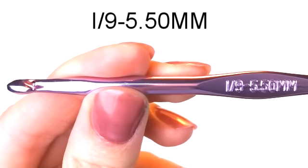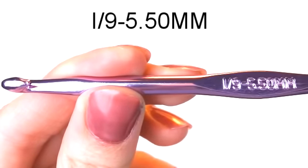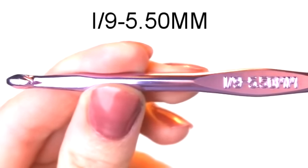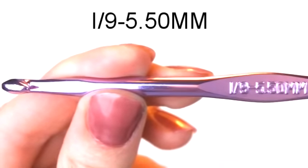When you go out and purchase your first hook, I recommend buying an I-9 hook to start out with. This hook is very comfortable for beginners, and it also creates bigger stitches that are easier to see.